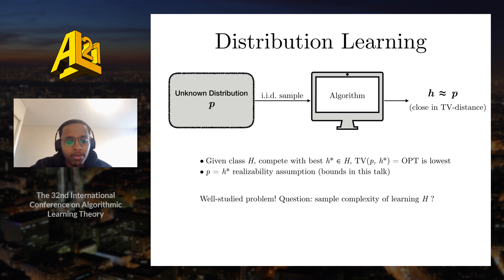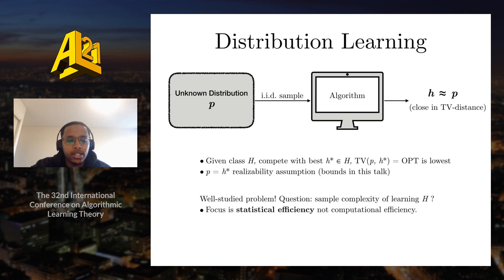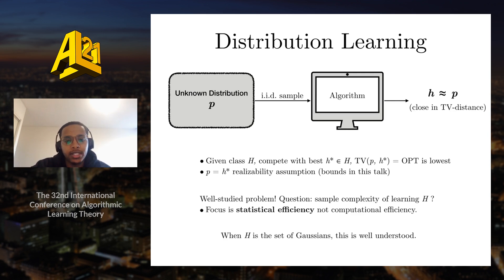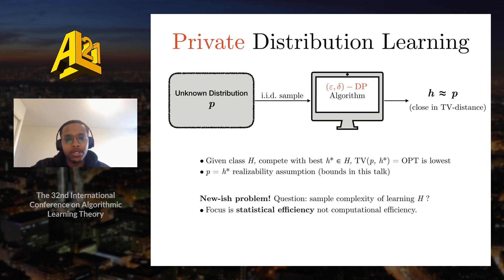Distribution learning is a really well-studied problem, and the question we are interested in is what the sample complexity of learning a given class H is. Our focus is on statistical efficiency rather than computational efficiency. When H is the class of Gaussians, this is a very well-understood problem and the sample complexity is well-known. In private distribution learning we have the same problem setting, except now we want our algorithm to satisfy ε-δ differential privacy. When H is the class of Gaussians, the sample complexity is actually not so clear.